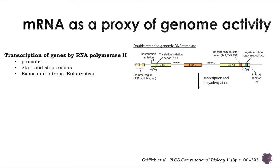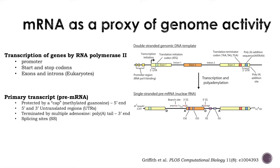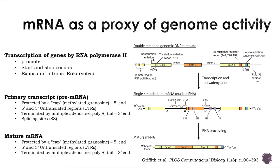The genome is transcribed into mRNA by RNA polymerase II. In eukaryotes, this happens upon promoter binding. There are start and stop codons, and exons and introns that are a feature of eukaryotes. This process yields a primary transcript, also called pre-mRNA. This primary transcript has to be spliced to get rid of introns at splice donor and splice acceptor sites. The mRNA also has a 5' methylguanine cap and a poly-A tail, both required for stabilization. Upon splicing, introns are removed and only exons are kept.